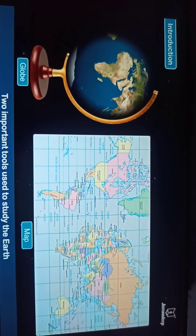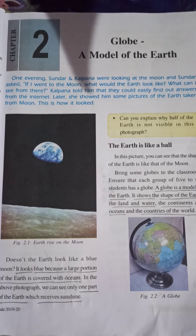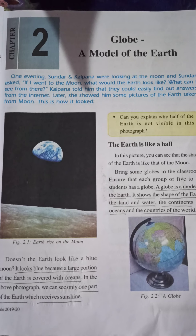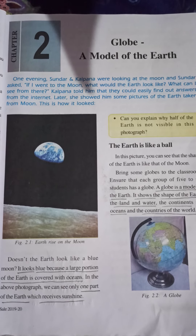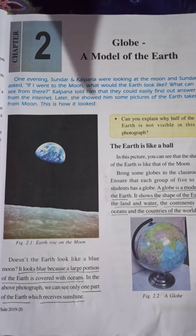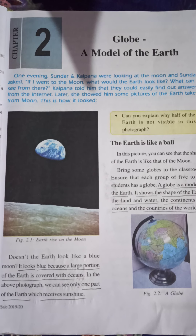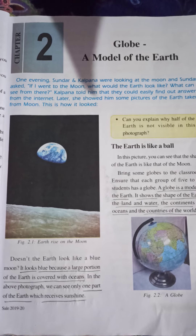Water bodies. The large water bodies called oceans are shown in blue color. There are five oceans on the planet Earth. They are the Atlantic Ocean, the Pacific Ocean, the Indian Ocean, the Southern Ocean, and the Arctic Ocean.